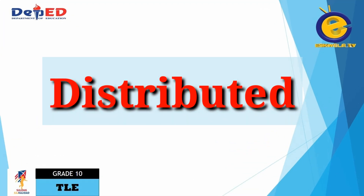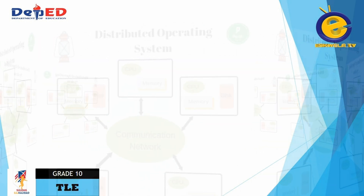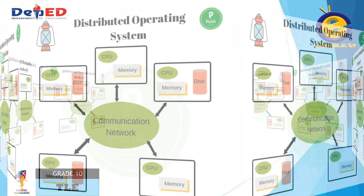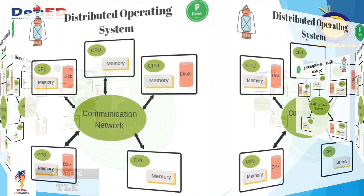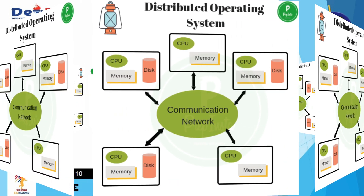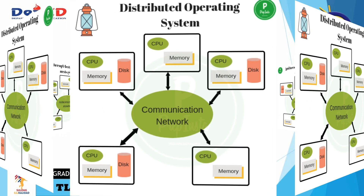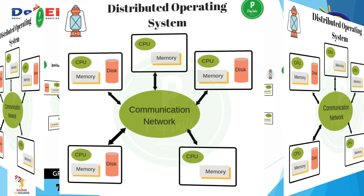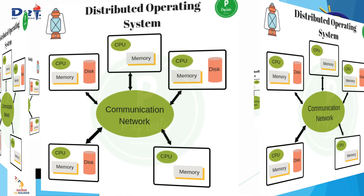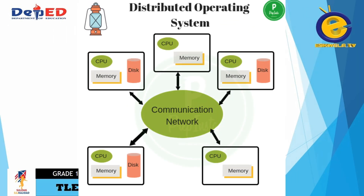The fourth type of operating system is distributed. A distributed operating system manages a group of independent computers and makes them appear to be a single computer. The development of network computers that could link and communicate with each other gave rise to distributed computing. Distributed computations are carried out on more than one machine, and when computers in a group work in cooperation, they make a distributed system.